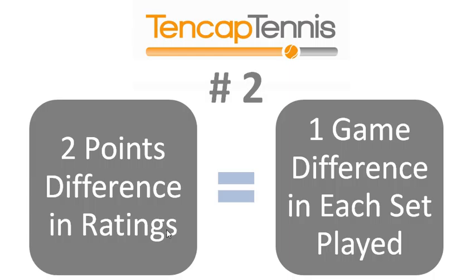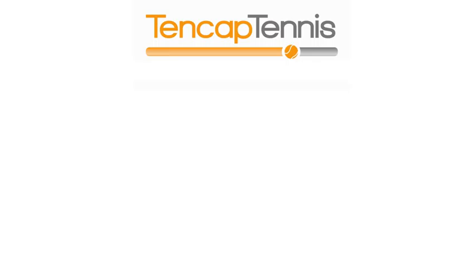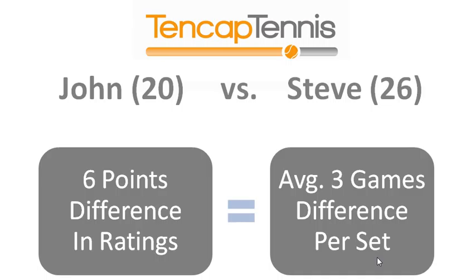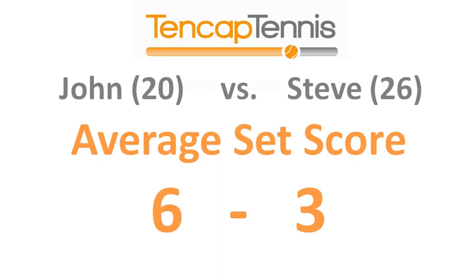Second thing to remember: every two points difference in a player's rating is equivalent to one game difference in each set played. For example, if Steve with a 10cap of 26 plays John with a 10cap of 20, there's a six-point difference. If two points equals one game, then on average John would beat Steve 6-3. The 10cap tennis rating system acts as a predictor of the tennis score, much like a golf handicap.